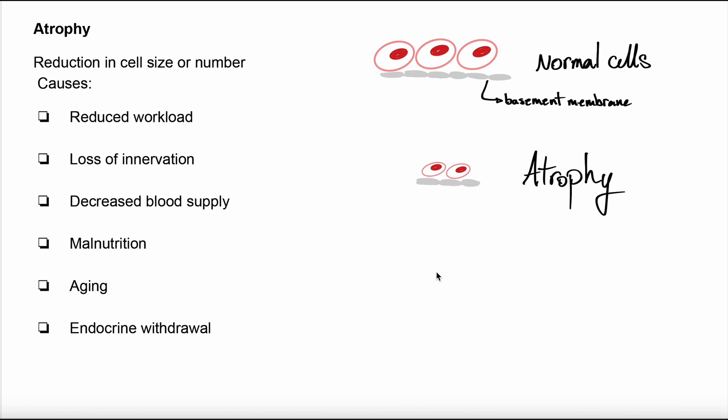For example, physiological atrophy occurs during embryonic development. There are several causes for pathological atrophy, such as reduced workload. For example, muscle atrophy in immobilization or loss of innervation or decreased blood supply. Ischemia can lead to atrophy. Malnutrition can lead to atrophy. Aging, for example cortical brain atrophy in dementia or endocrine deficiency. After menopause, we have endometrial atrophy.